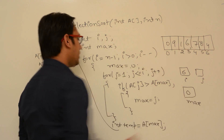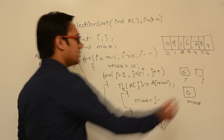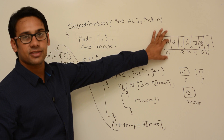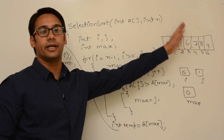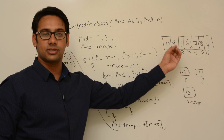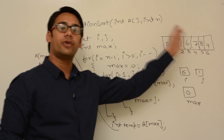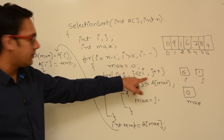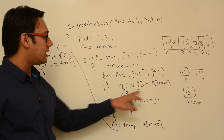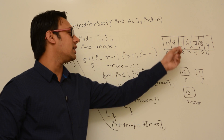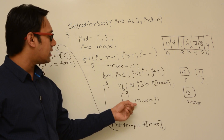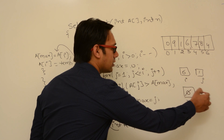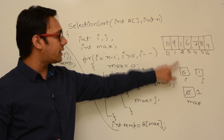Max is initially storing 0. Then for j equal to 1. The inner for loop is trying to find the maximum data. Initially we assume the first data is maximum, then compare it to all other data. When we find a value greater than the current max, we remember that position in max. So when j is 1, a of j is 9 and a of max is 0. Since 9 is greater than 0, max is updated to 1. We are remembering the position of 9.